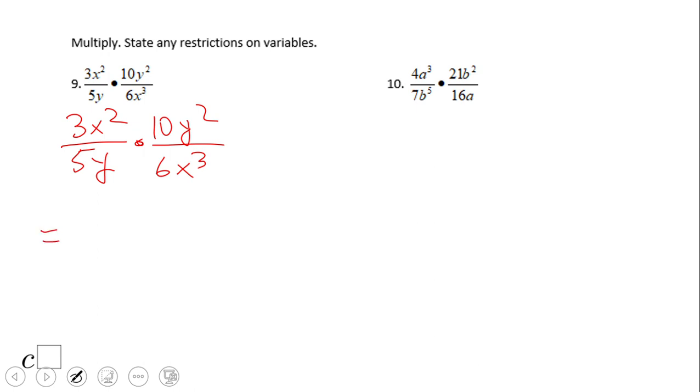How do we do that? We have two ways and I will show you the first one doing this problem number 9. Separate, first of all, 3 fifths times 10 over 6, so we separate the numbers. But also separate the variables: x squared over x cubed times y squared over y. Here you can use either laws of exponents for the last part, or simplifying the expression. I'm going to use the second way, you will see what I meant.